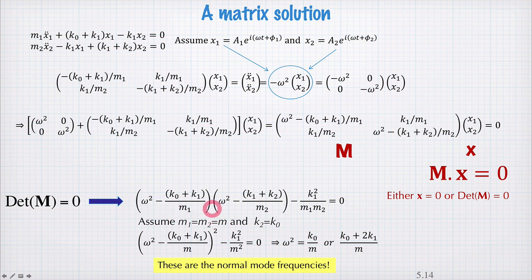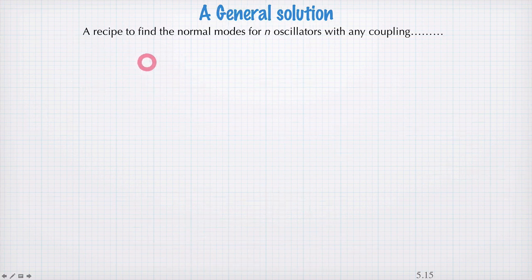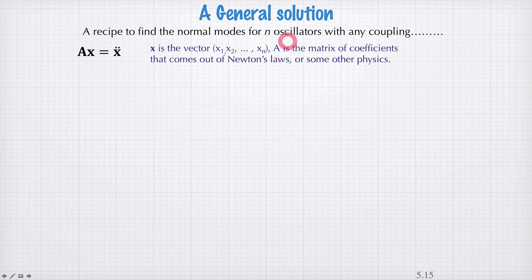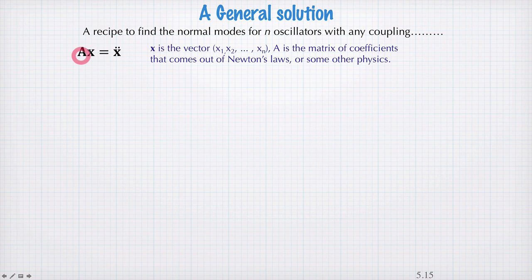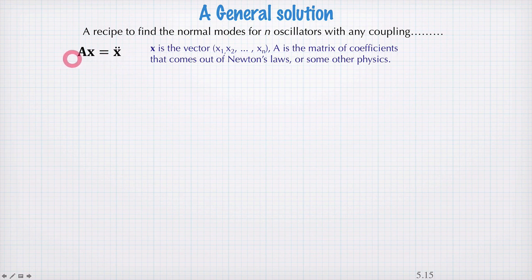In this case we could actually have solved a more complicated situation with arbitrary masses and spring constants. Let's now see how this method works for n coupled oscillators. If we have n oscillators then each will have a coordinate x, and our vector x will be n elements long — x1 through to xn. The matrix A will be some matrix full of coefficients, and for springs and masses those coefficients will be made up of spring constants and masses. A times x will equal the second derivative of the vector x. This kind of system of equations comes out of Newton's laws for n coupled masses, and more generally any system of equations of this form can be solved using the method we're about to see.